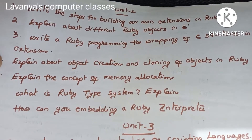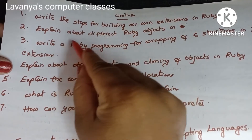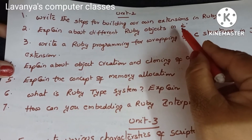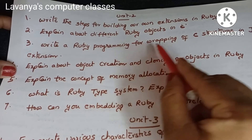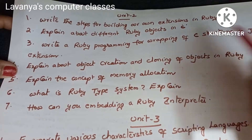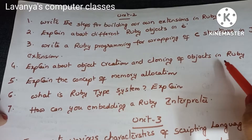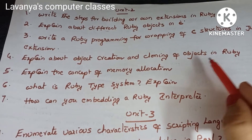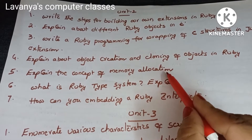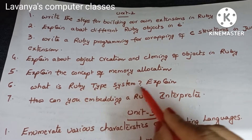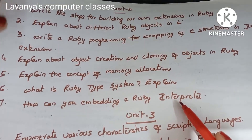Unit 2 important questions: write the steps for building your own extensions in Ruby. Next, explain about different Ruby objects in C language. These two questions are from old university question papers. Write a Ruby program for wrapping of C structures in a jukebox extension. Next, explain object creation and cloning of objects in Ruby — also an old university question. Explain the concept of memory allocation in Ruby. Next, what is the Ruby type system? How can you embed a Ruby interpreter? These are the questions from unit 2.